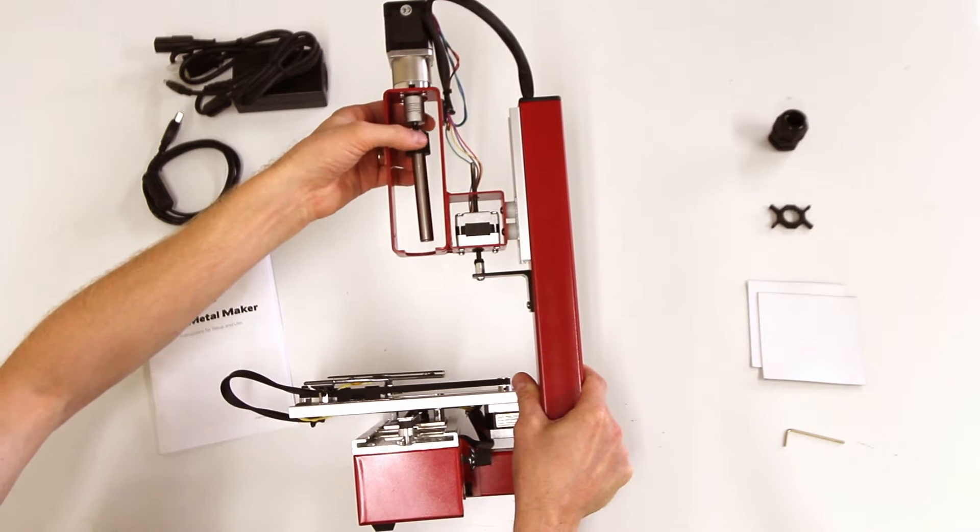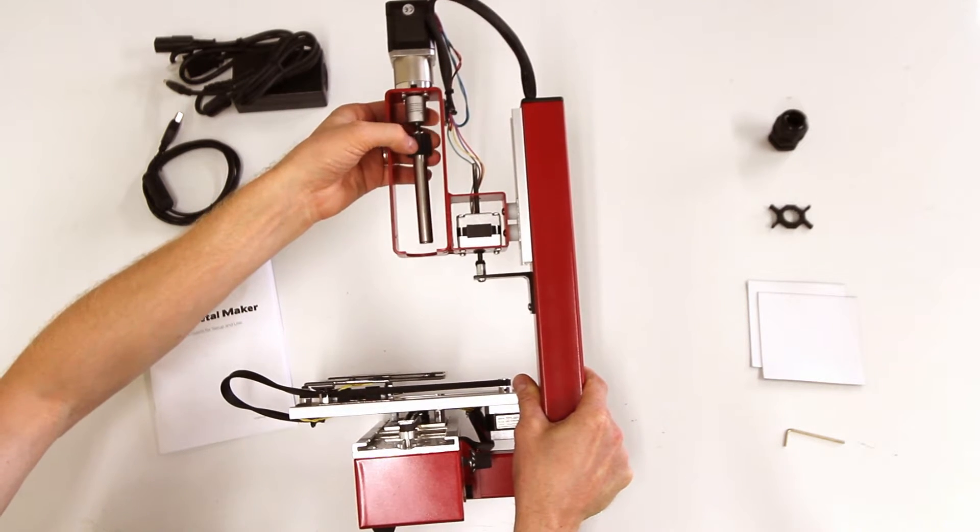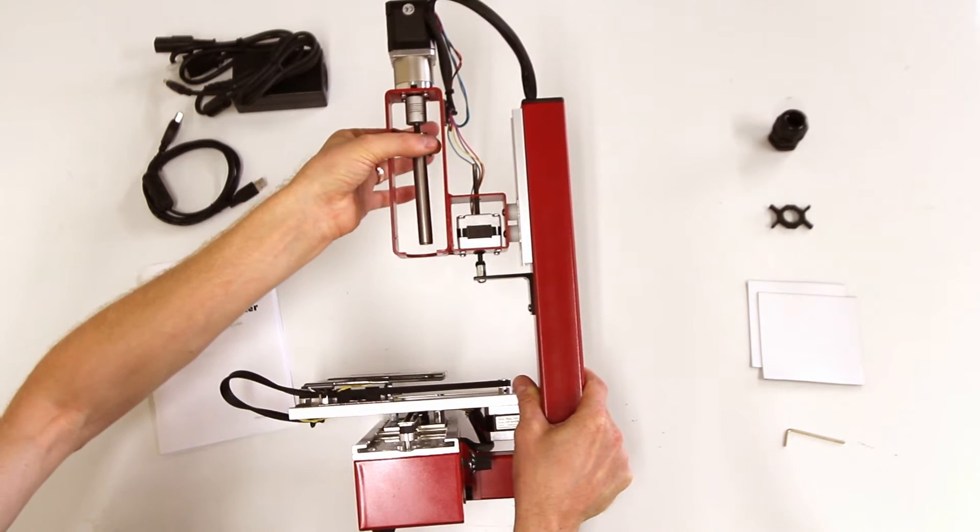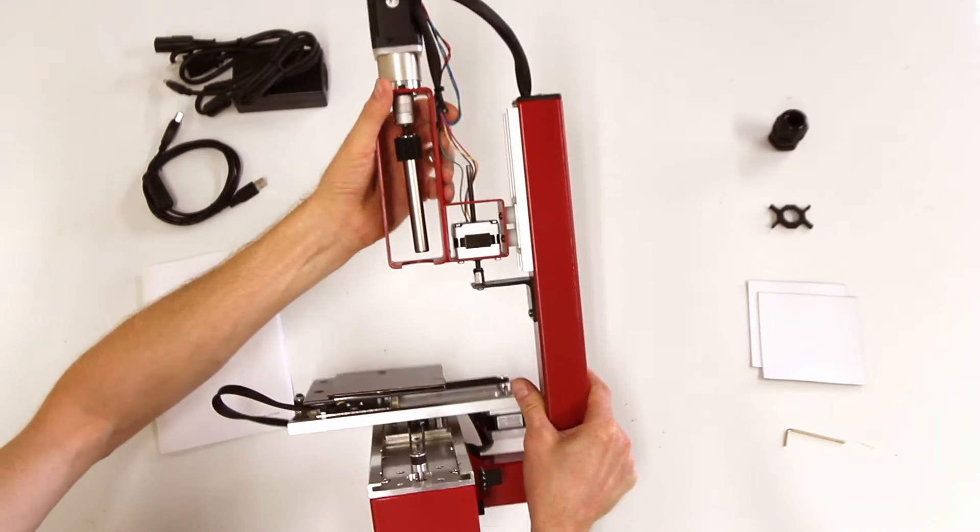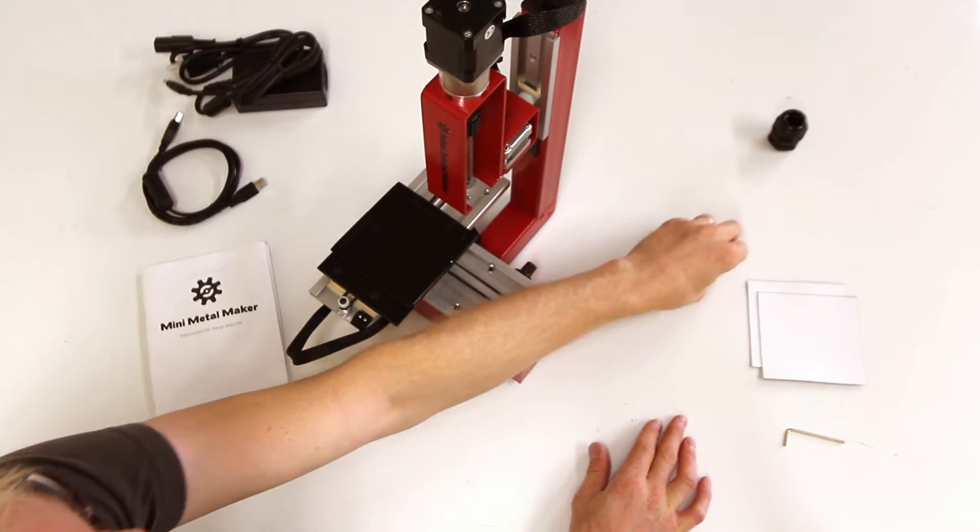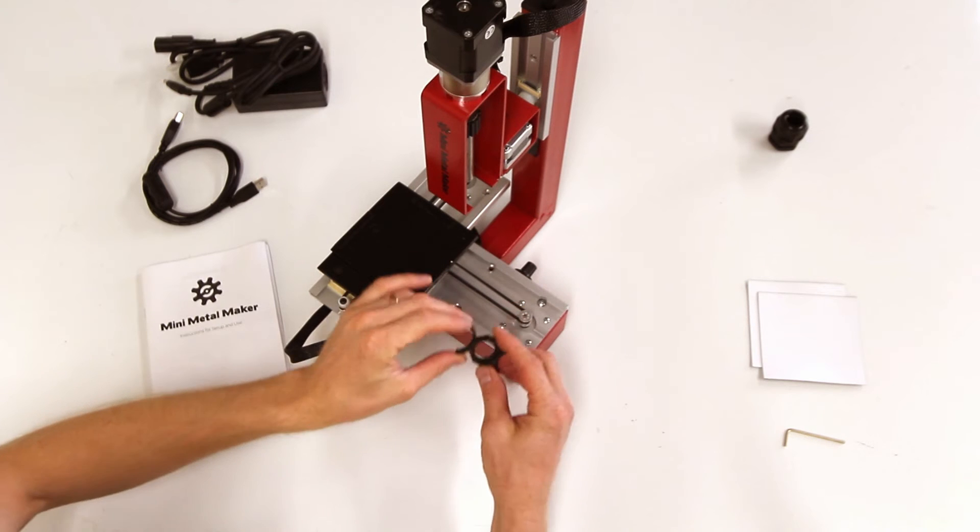Something that we've noticed after the fact is that it has a tendency to turn by itself if you don't have something to hold that in position while you're printing. That's where this item comes in.